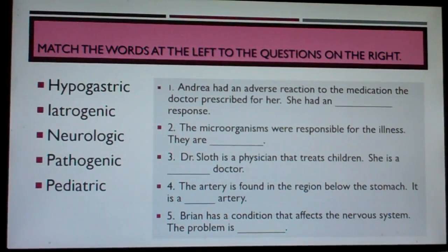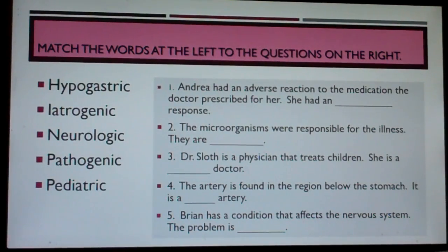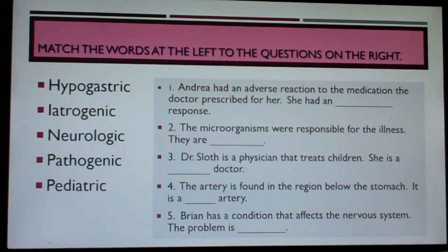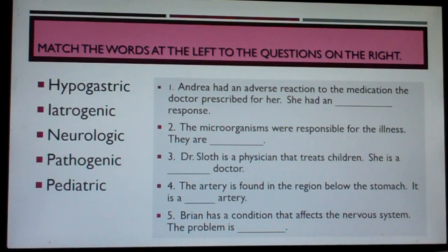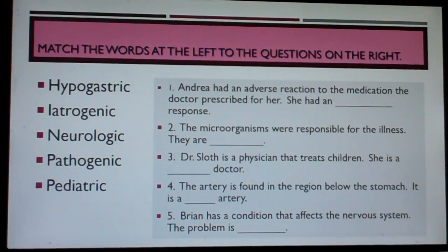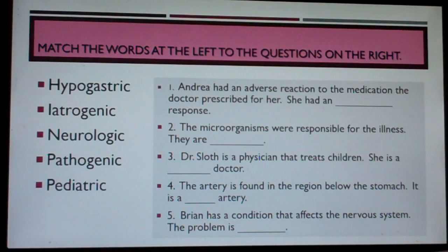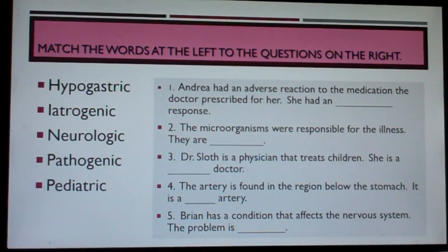Number three: Dr. Sloth is a physician that treats children. She is a blank doctor. Number four: The artery is found in the region below the stomach. It is a blank artery. Number five: Brian has a condition that affects the nervous system. The problem is blank.